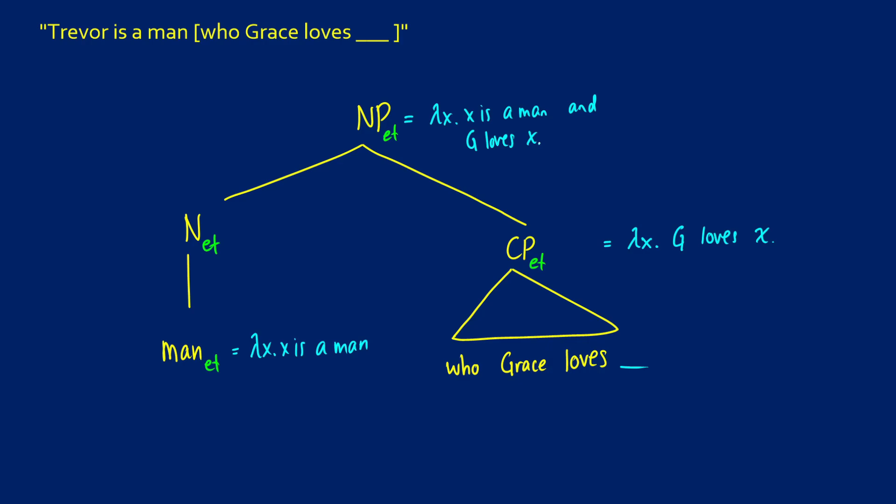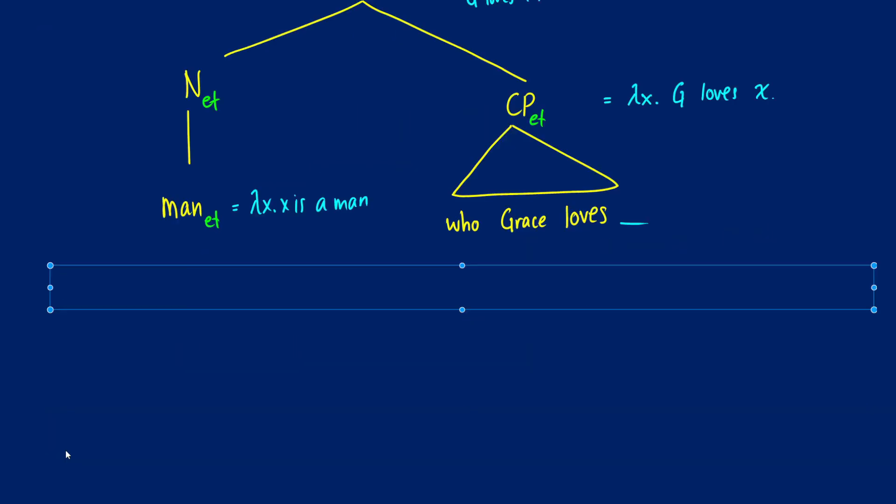So this is how we can get predicate modification to also deal with our relative clauses. Now what you might be noticing about relative clauses at this point is that it's really just a rephrasing of that intersective adjective meaning. So we can say Trevor is a man who Grace loves, or we can say Trevor is a loved-by-Grace man.